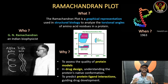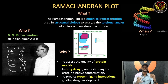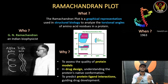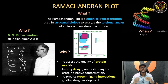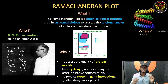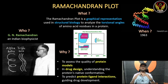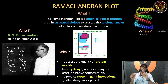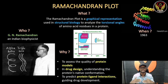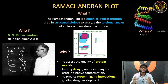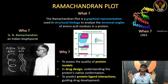The graph is used in structural biology, in a biological molecule, and specifically in analyzing the torsional angle. The protein is made of amino acids. This is the core concept of the Ramachandran Plot.